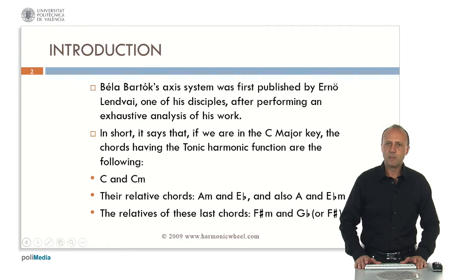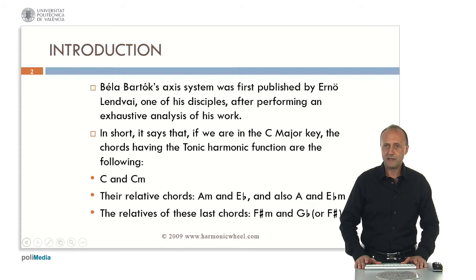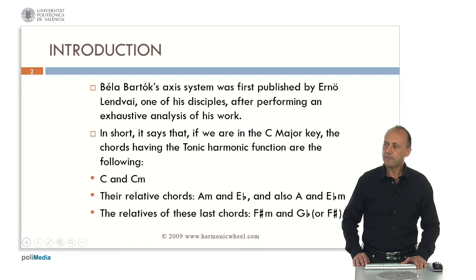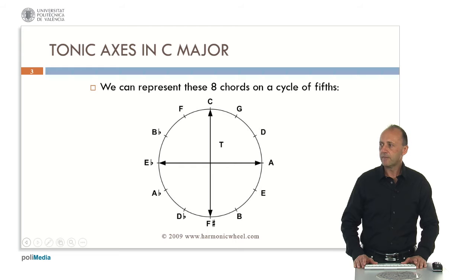He also found a special system of axes which says that if we are in the C major key, the chords with the tonic harmonic function are not only C major but also those chords obtained by looking for parallel and relative chords. So, starting with C major, we find the parallel C minor, the relative chords A minor and E-flat major, the parallel of these two chords, A major and E-flat minor, and the relatives of these last chords, F-sharp minor and G-flat major or F-sharp major.